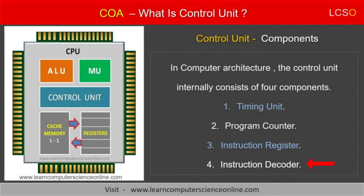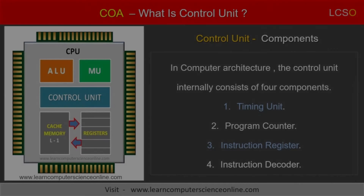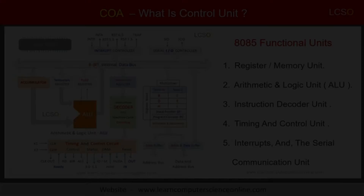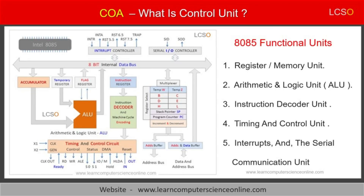The fourth internal component of the control unit is called the instruction decoder. The control unit internally consists of an instruction decoder circuit that decodes the machine instruction format. The main function of the instruction decoder unit is to translate the operation code part of the machine instruction format into signals that direct the ALU. The control unit, after the decode operation, generates the control signals for the arithmetic and logic unit and directs the ALU to perform the desired operation. The ALU then operates on the data as per the operation code and the instruction set architecture ISA supported by the processor.